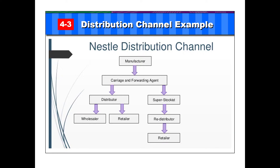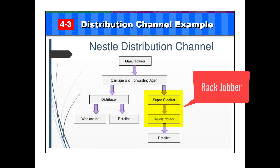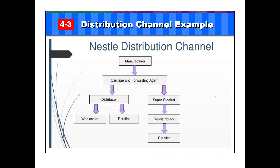Finally, this is Nestle's distribution channel — it shows some more of those different types of intermediaries. They have a manufacturer who uses a carriage and forwarding agent, which goes down to their distributor, and the distributor brings it to the wholesaler or retailer. They also have a carriage or forwarding agent who could bring it to a super stockist — another word for that rack jobber — which brings it to a redistributor and then to the retailer. Just some more examples of channels of distribution.